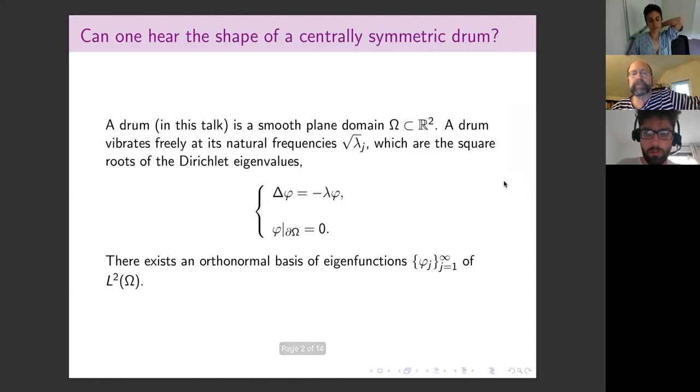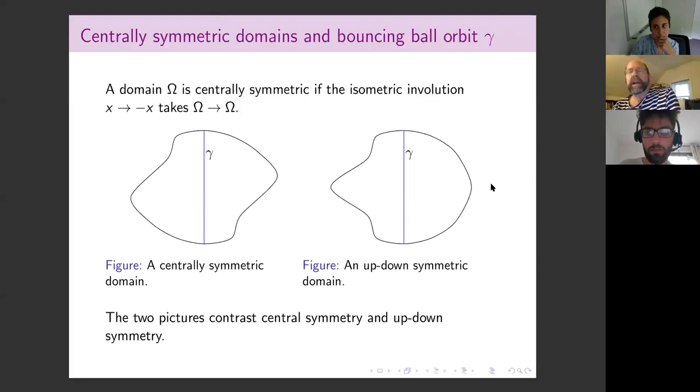As everybody knows, the inverse spectral problem has to do with - I think I'm going to use lambda squared for the rest of this talk - the eigenvalue problem. Let's say Dirichlet or Neumann boundary conditions and some kind of compact. Everything in this talk will be compact smooth plane domains. So that's about centrally symmetric domains. Central symmetry is the map of the plane to the plane that takes X in R² to minus X.